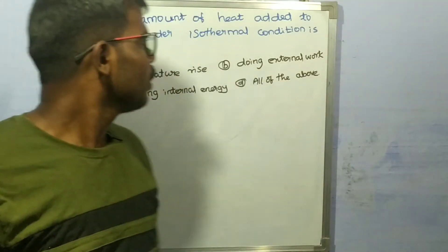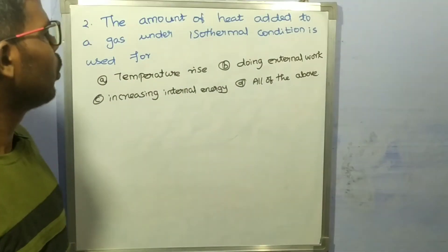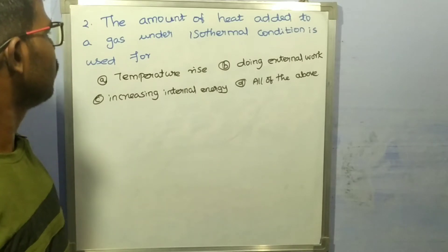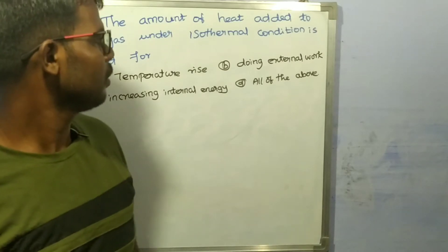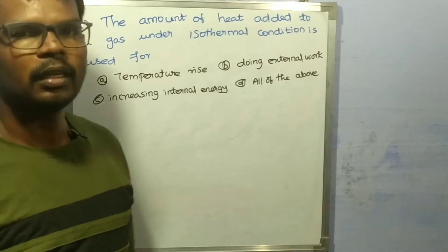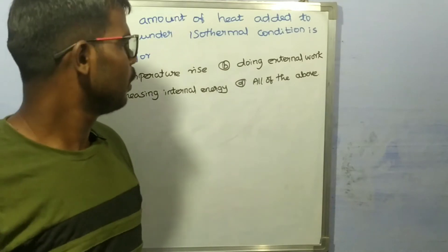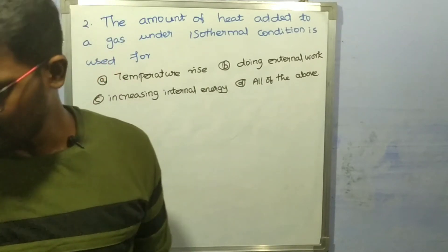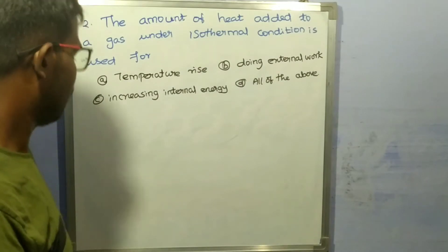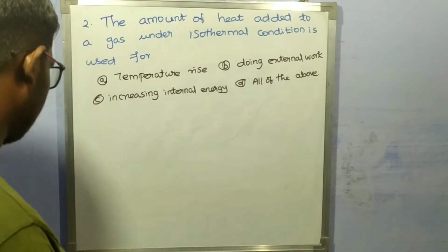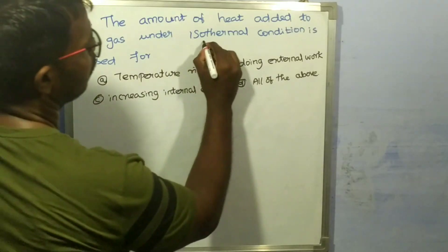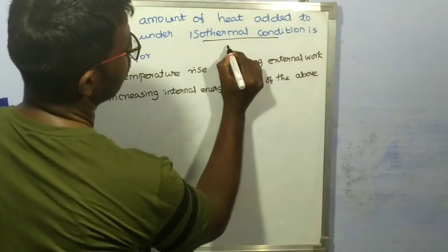Second question: the amount of heat added to a gas under isothermal condition is used for — options are: A) temperature rise, B) doing external work, C) increasing internal energy, D) all of the above. Under isothermal condition, temperature is constant.